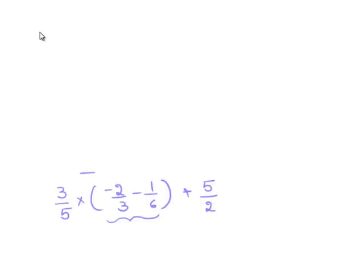Therefore, we rewrite the expression with the common denominator, which is 3 by 5 times and the common denominator is 6. 3 times 2 is 6. Therefore, minus 2 times 2 is minus 4. Left over with minus 1 plus 5 by 2.